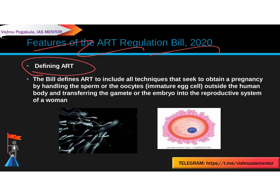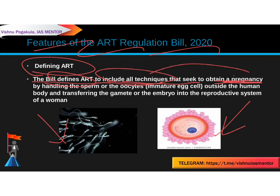A sperm is a male reproductive cell or gamete. An oocyte is an immature cell that needs to mature before fertilization can occur — it is a female germ cell that develops within a follicle inside the ovaries. So the bill defines ART to include all techniques to obtain pregnancy by handling the sperm or oocytes outside the human body, then transferring them into the gamete or embryo into the reproductive system of a woman.